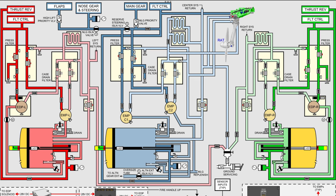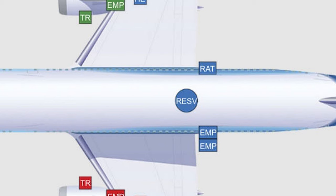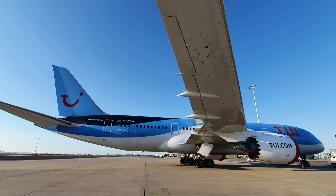The hydraulic reservoir for the left system is located in the pylon of the left engine. The center reservoir is located in the center section behind the main wheel well, and the right hydraulic reservoir is located in the pylon of the right engine. On the photo you see where the engine pylon is located.